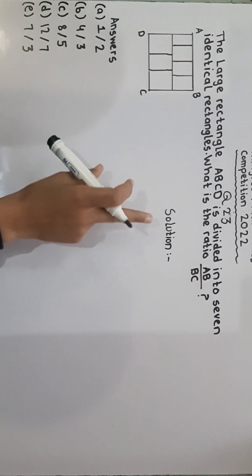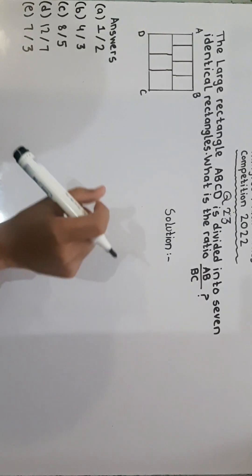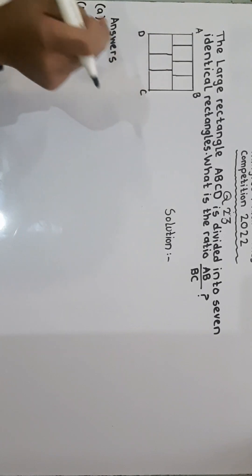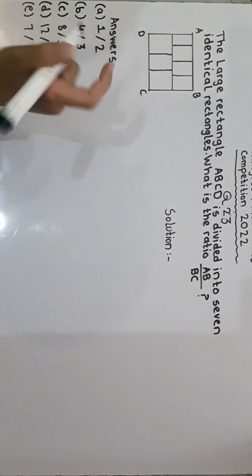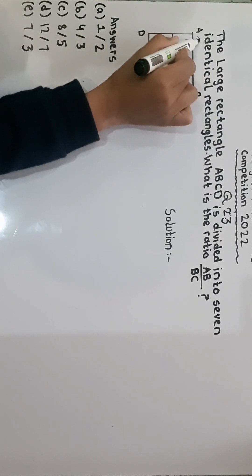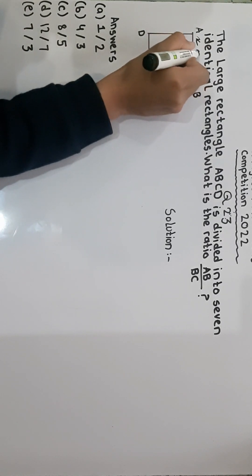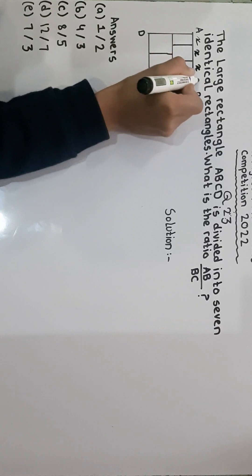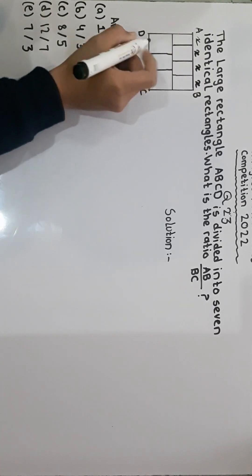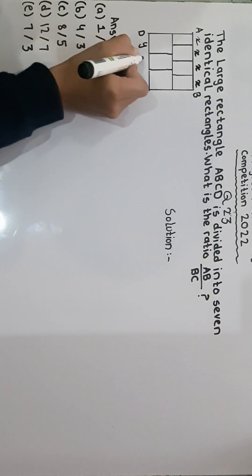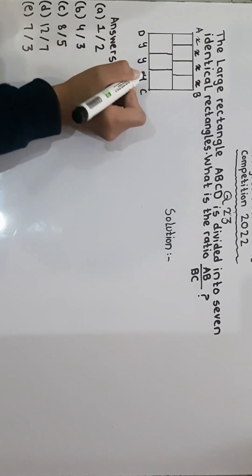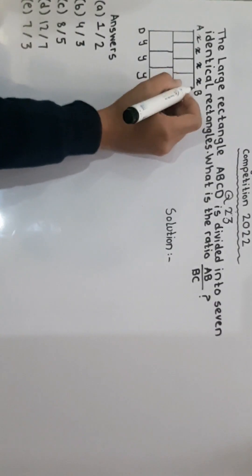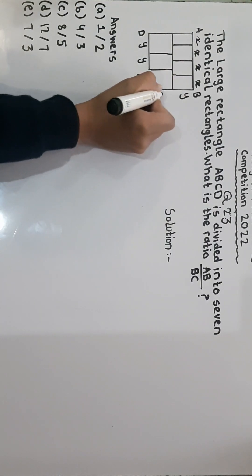They are saying that ABCD is divided into 7 identical rectangles. First, we will name these 7 identical rectangles. Let's give the upper rectangles name X and the lower rectangles we can give them name Y.